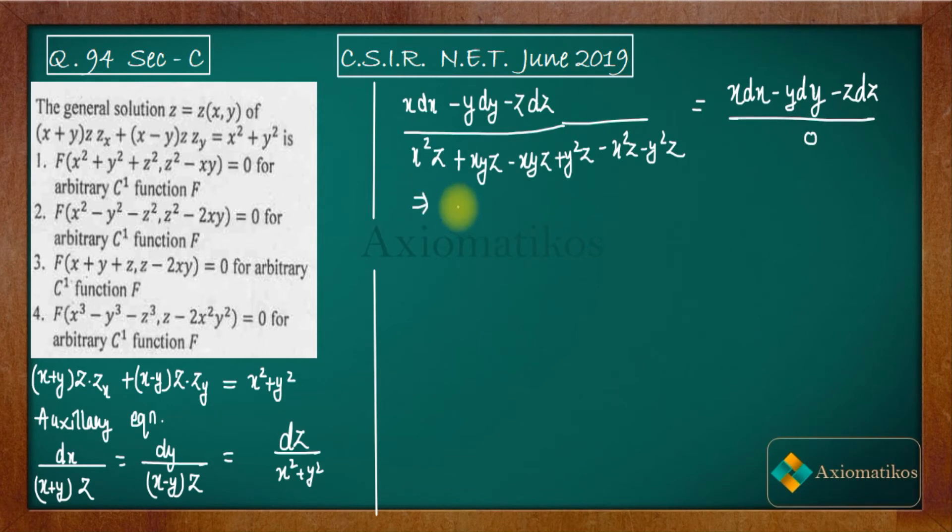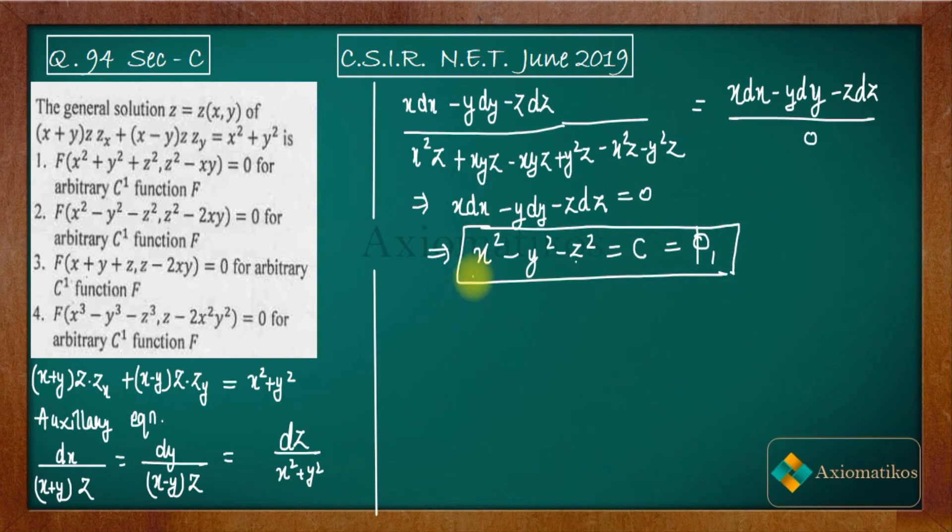So it implies x·dx - y·dy - z·dz equals zero. Your first solution will be given by (x² - y² - z²)/2 = C. So this is what we will get as our first solution. Let us consider this phi₁ and let us highlight it.